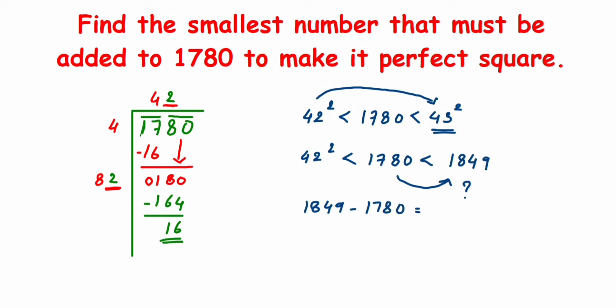Simply subtract it. 1849 minus 1780. When you subtract, you will get 69 as an answer. So the smallest number which has to be added will be 69. If I add 69, I'll get the answer.